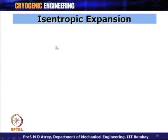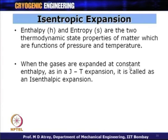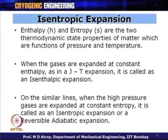Now we will talk about isentropic expansion, where entropy remains constant. Enthalpy and entropy are two thermodynamic state properties, which are functions of pressure and temperature. When gases are expanded at constant enthalpy as in JT expansion, it is called isenthalpic expansion. When high-pressure gases are expanded at constant entropy, it is called isentropic expansion, or reversible adiabatic expansion.